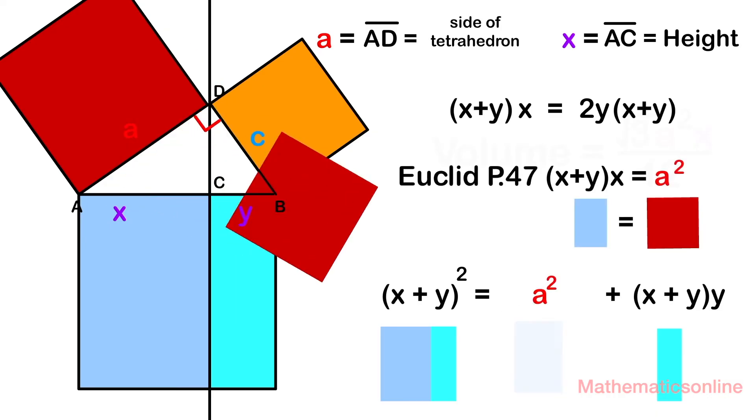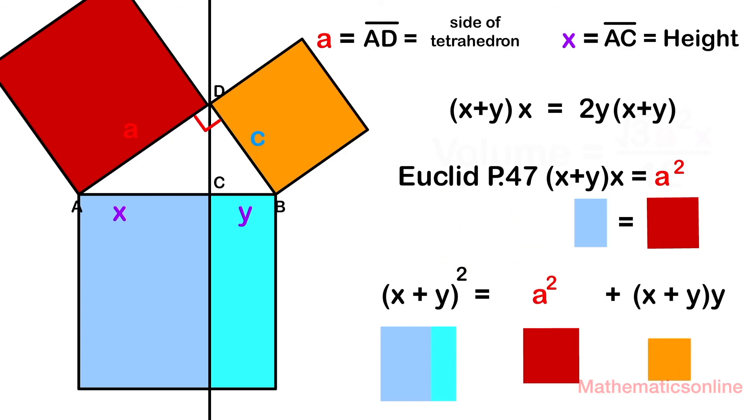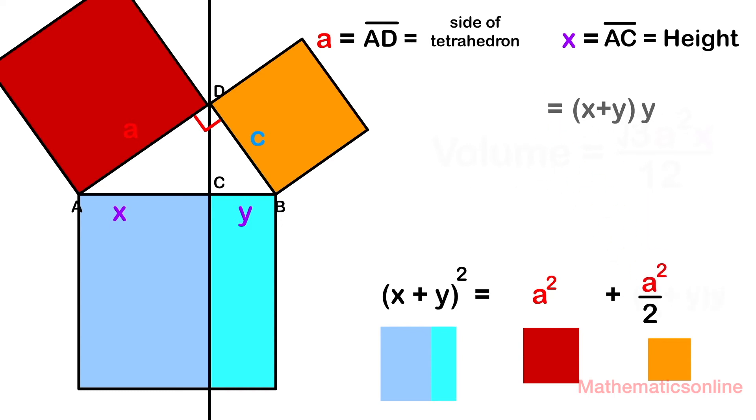And again, from Euclid's proof, the area of the rectangles are equal to the areas of the corresponding squares. Let's go ahead and do some substitutions. So we have x plus y squared is equal to a squared plus a squared divided by 2.